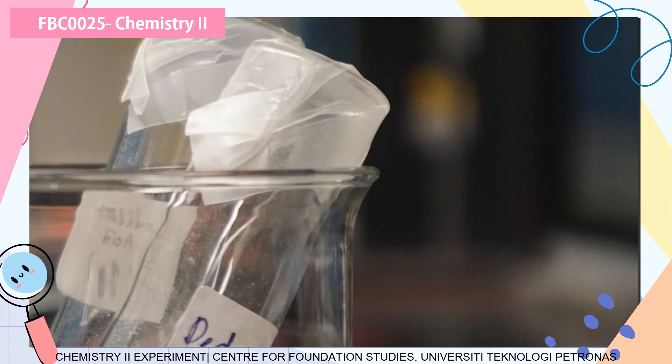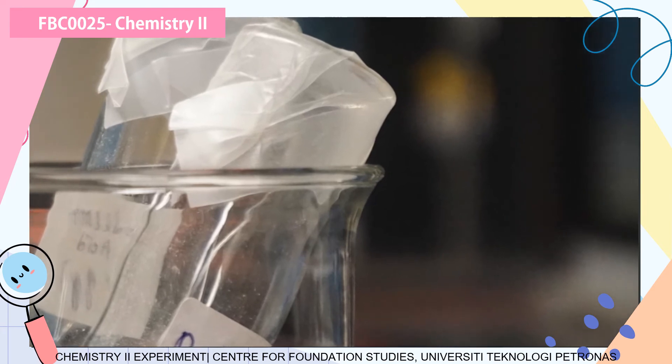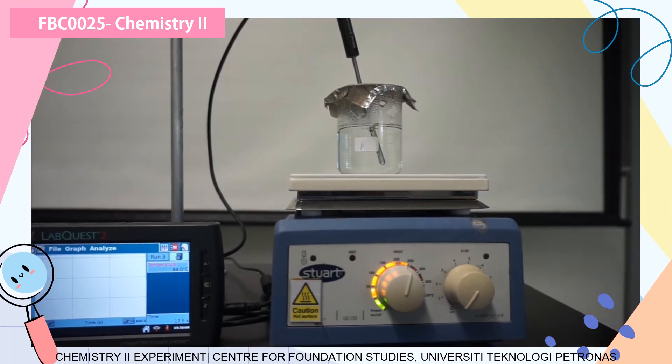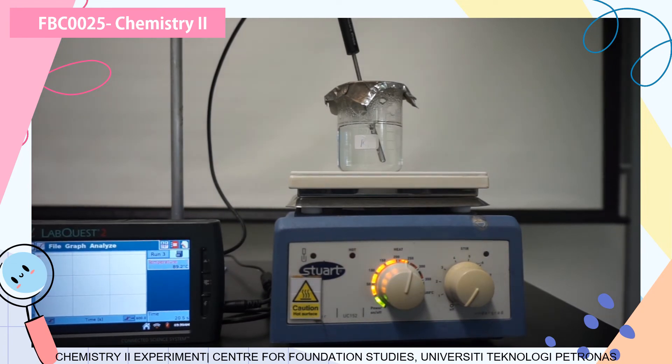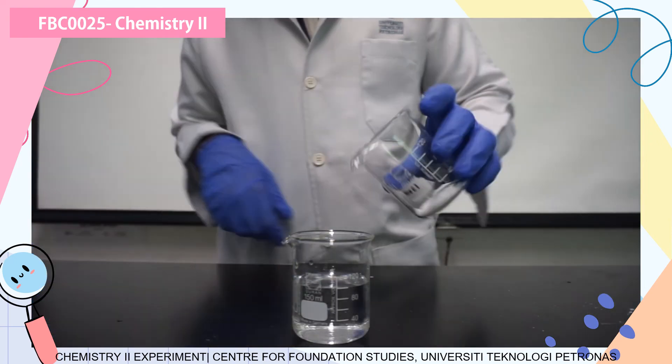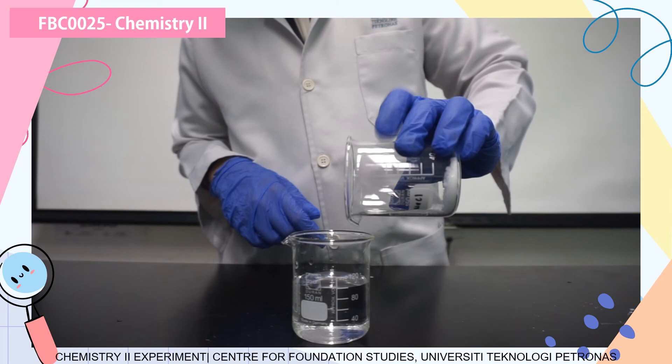After that, we are going to poke a small hole on the aluminum lid. When we poke a small hole there, we are going to insert the temperature probe. For the temperature probe here, we are going to start collecting the data. Make sure that the temperature reaches around 90 degrees Celsius based on the lab manual. Once it is 90 degrees Celsius, you can click start on the LabQuest interface there. Once you click start, you will get the data.